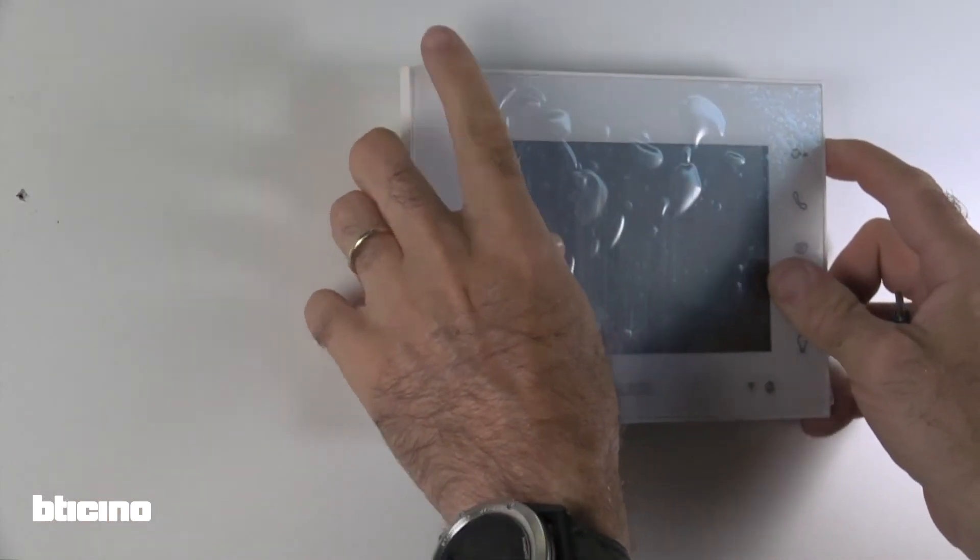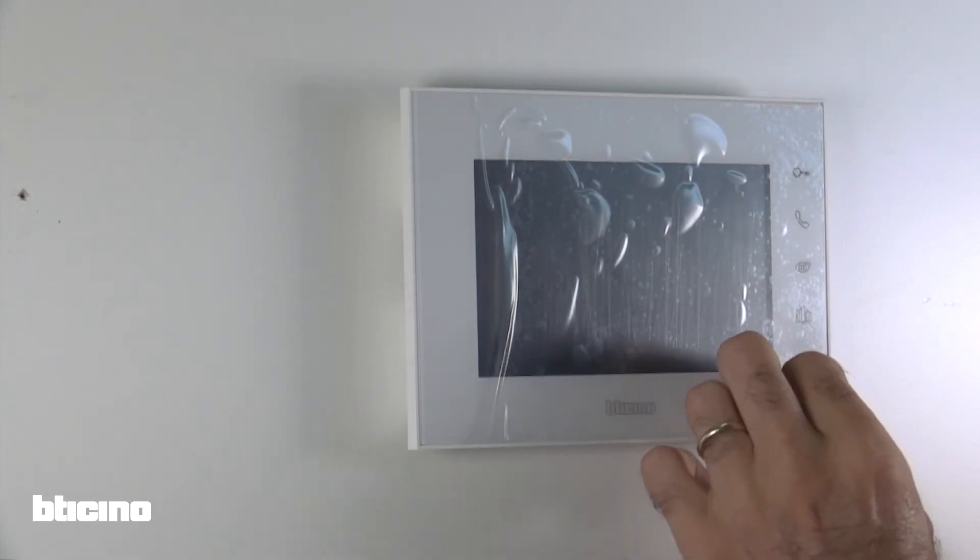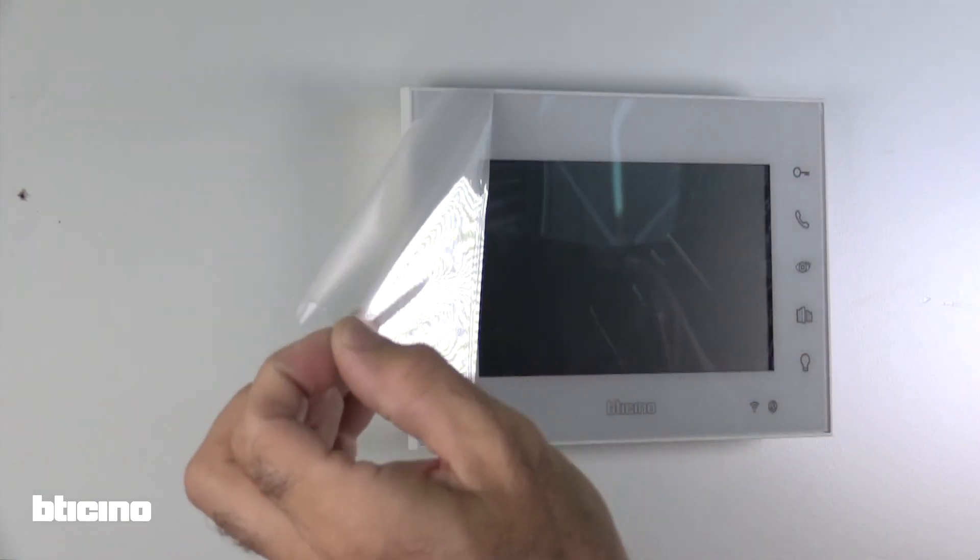Attach the monitor to the wall bracket and connect the power supply plug to a power point and turn it on. The wiring installation is now complete.